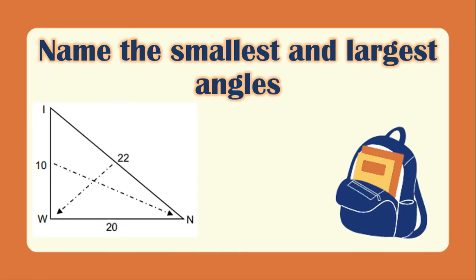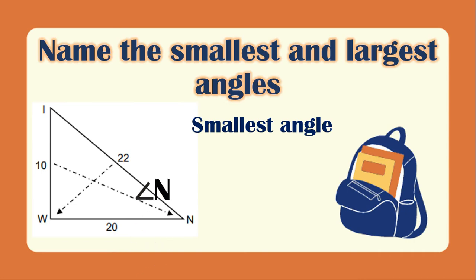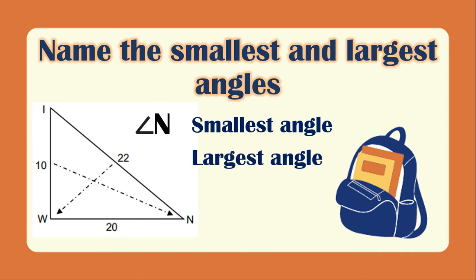Another example. For the smallest angle, you will just look at the shortest side, which is side IW, and the opposite angle of that side is angle N. For the largest angle, which side is the longest? We have side IW and the opposite is angle W.